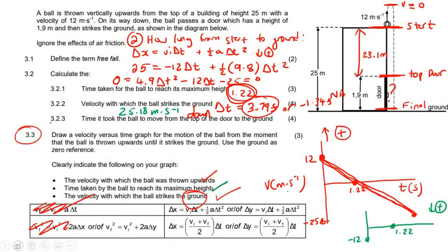If you chose down as positive, then the initial velocity is −12 m/s, the velocity at maximum height is still zero at t = 1.22 s, and the final velocity when striking the ground is +25.18 m/s. Those are the two versions of the graph depending on your sign convention choice.